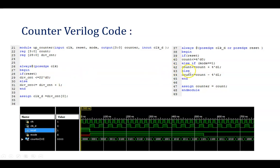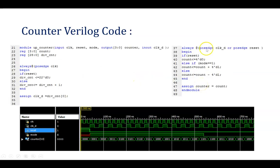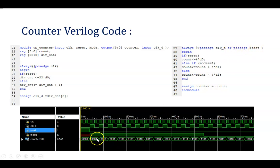This is very important: the always block uses posedge CLK_D. As mentioned earlier, we are using CLK_D for the up-down counting instead of the main clock. CLK_D is mentioned in the sensitivity list. At the positive edge of CLK_D the counter will be working, and counting will change at each positive edge of CLK_D. Also, posedge reset must be written — this is very important. If you do not write this, you will not get that counting operation.